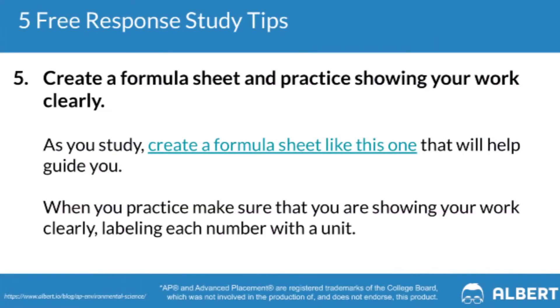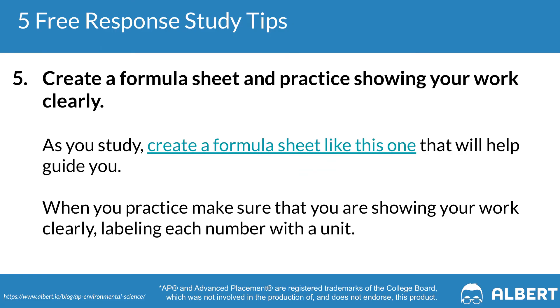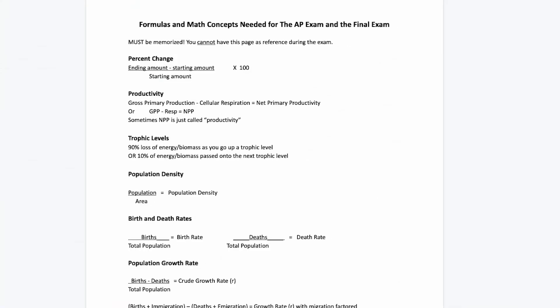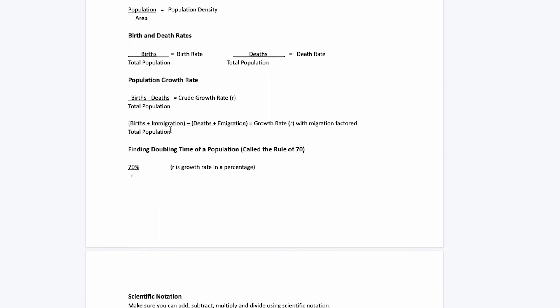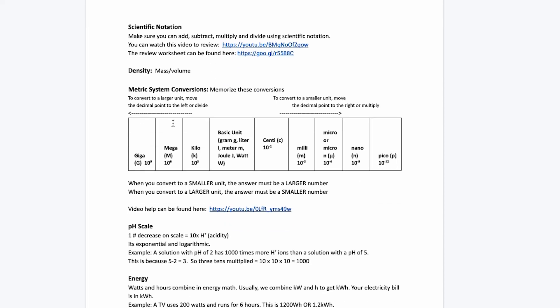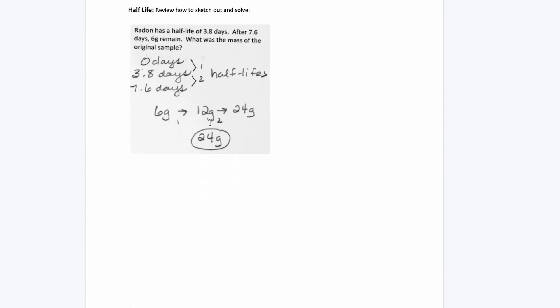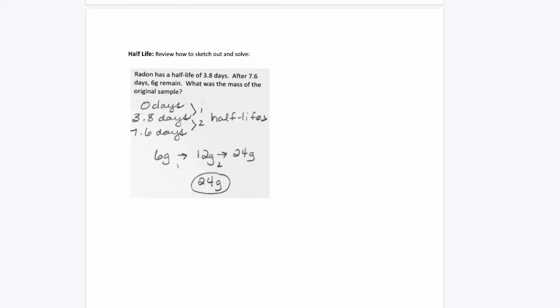Our fifth FRQ tip is to create a formula sheet and practice showing your work clearly. Showing your work is essential for scoring full points. Review YouTube videos that break down APES FRQ solutions for a look-over-my-shoulder approach. Build a formula sheet covering the rule of 70, population growth rate, productivity, population density, and birth and death rates.